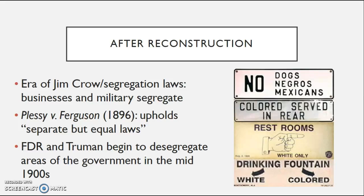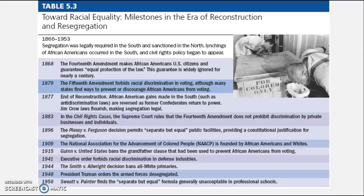These laws were upheld in the famous case Plessy v. Ferguson in 1896. This is not a required case, but you need to know what is called 'separate but equal' — the Supreme Court said that as long as separate facilities are equal at least on paper, they are constitutional. This allowed Jim Crow and segregation laws to continue. Over time, starting in the 1930s with FDR and then Truman, they began desegregating specific areas of government, especially with Truman desegregating the military in the mid-1900s. Even after the 13th, 14th, and 15th Amendments, fighting segregation and civil rights remained a very uphill battle.